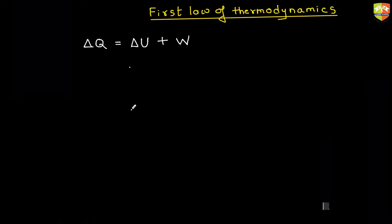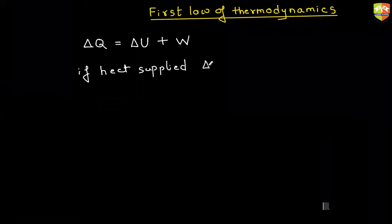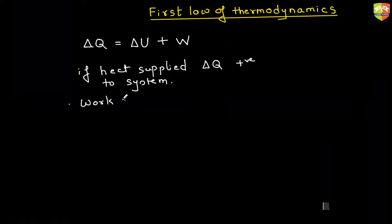We have learned about the sign convention. So I'll write it again. If heat is supplied, delta Q is positive heat supplied to the system. Otherwise, it is negative. And then similarly, if work done by the system, then W is positive. Otherwise, W is negative.